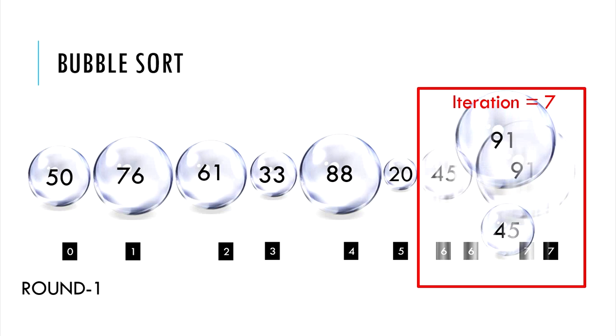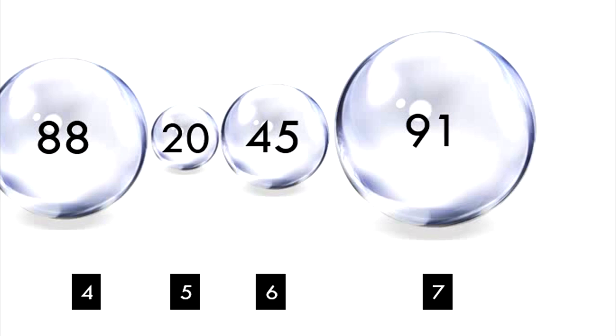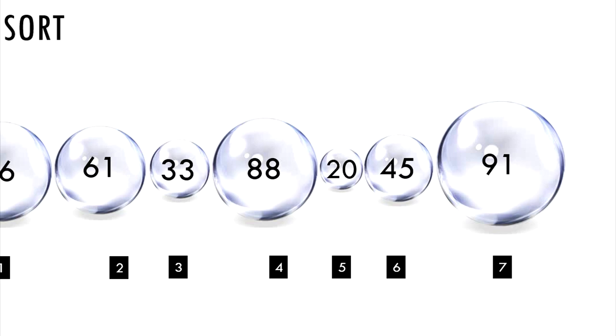So we have completed the n-1 which is 8-1 that is 7 iterations for round 1. Notice how the largest element in this array, 91, is moved towards the rightmost index. The largest bubble has reached the top. So let's pop it.